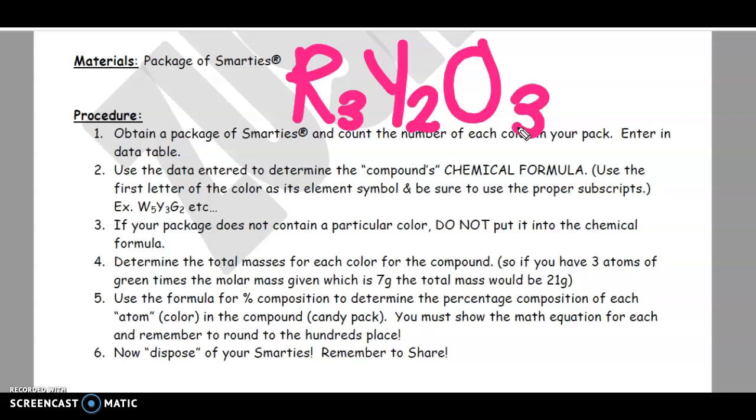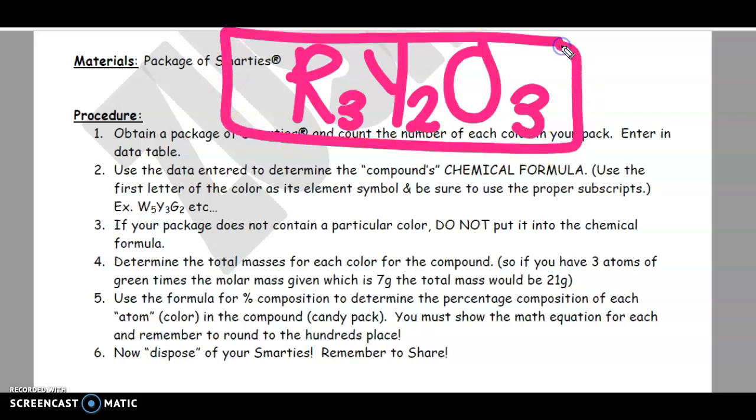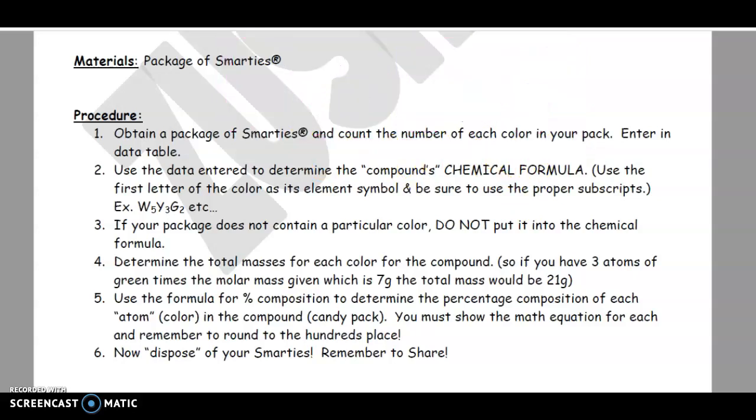So if this is all I had, if I only had these eight elements, this would be my chemical formula. So remember, the little number is the number of that color, or in our case, element that you have. Okay, so the next thing you're going to do, all right.